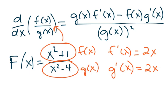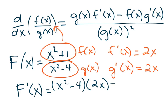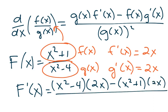And so if I want to find the derivative of that function, I'm going to take the bottom, so g of x, so it's going to be x squared minus 4 times the derivative of the top, or f prime of x, which we said was 2x, minus f of x, or x squared plus 1 times the derivative of the bottom, so g prime of x, which is 2x, all over g of x squared, so the bottom squared.